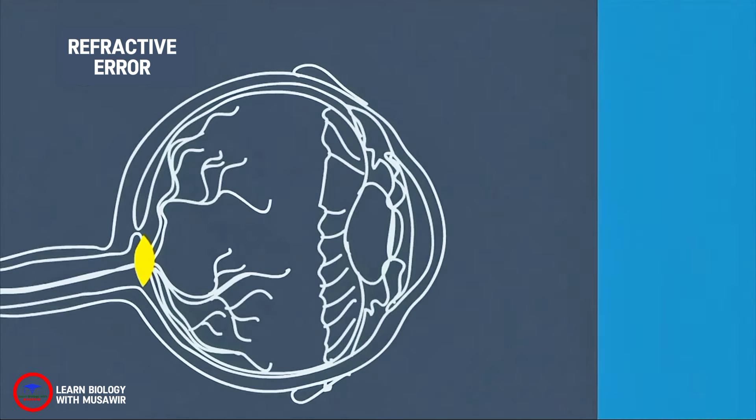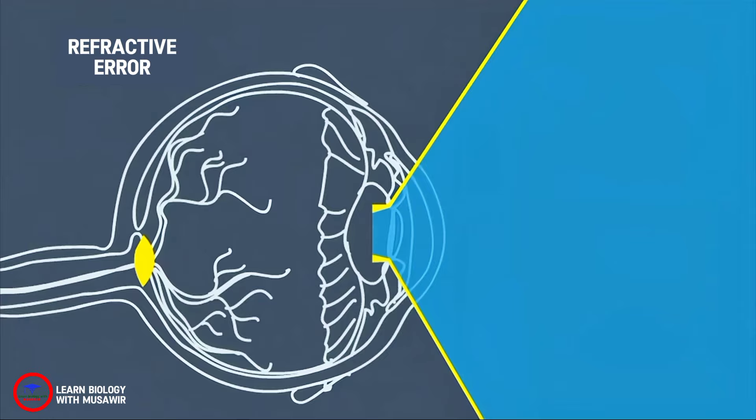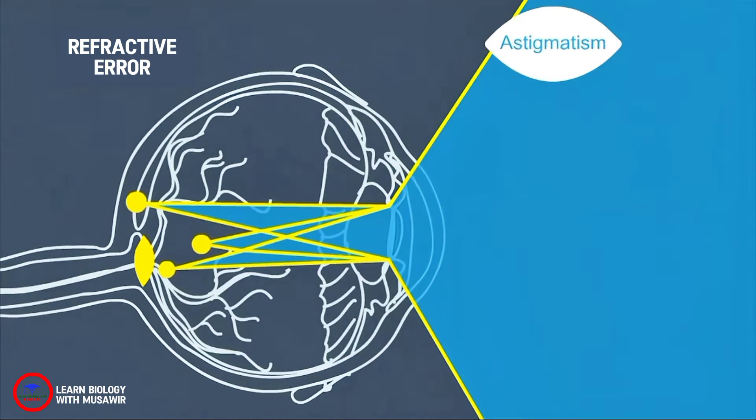Astigmatism occurs when the cornea is irregularly shaped. Light passing through this uneven cornea is not properly focused on the retina. Distance and close vision may both appear blurry.